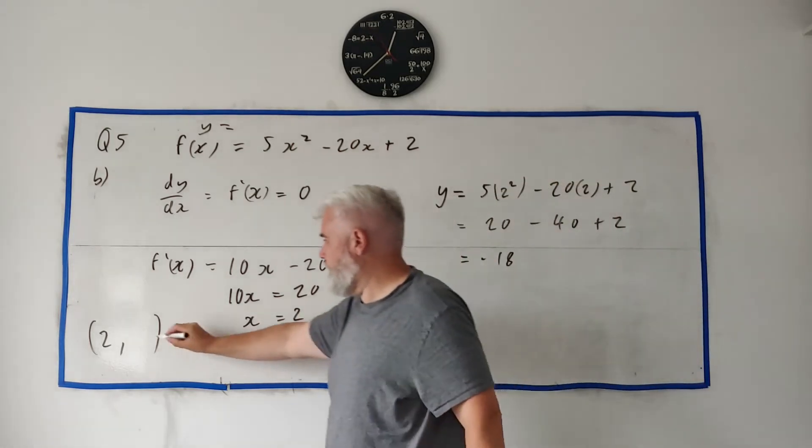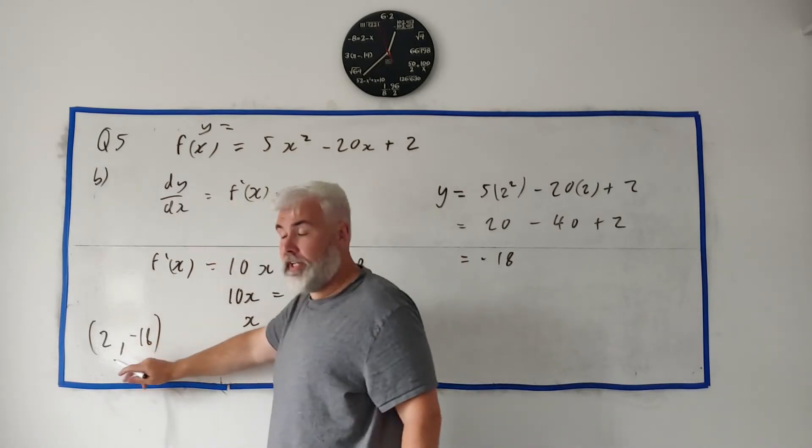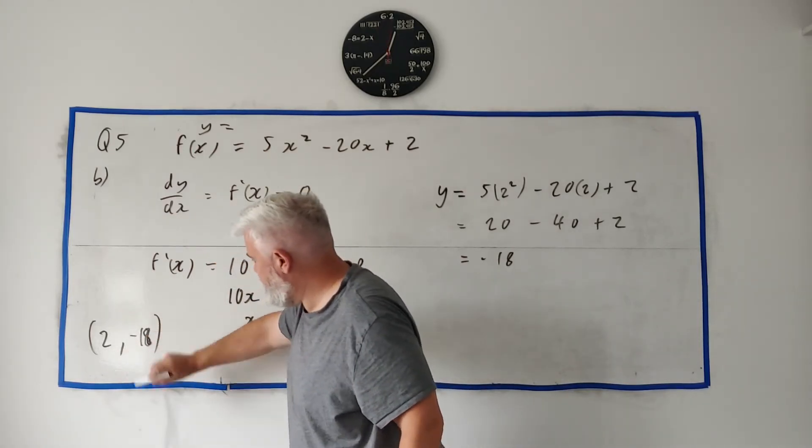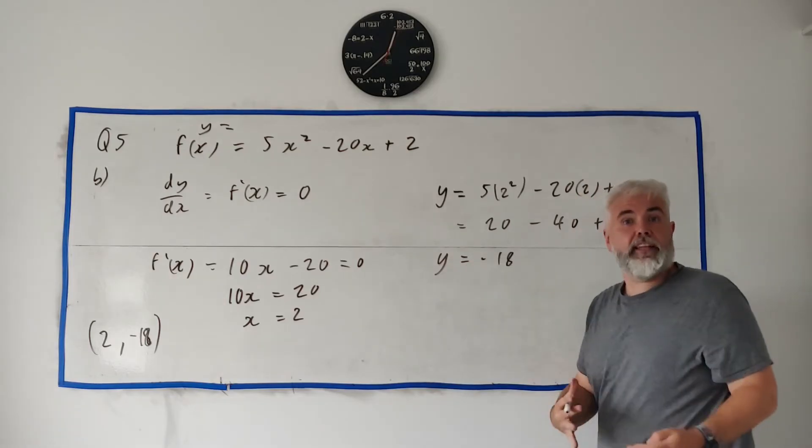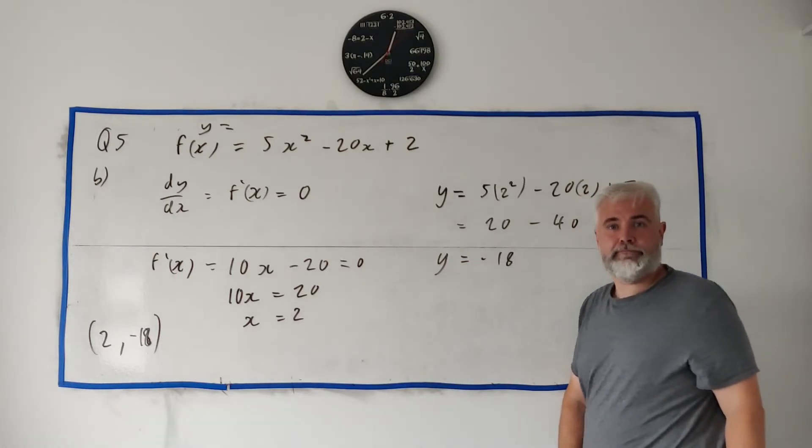Minus 18. So there's your full marks. You can write the point like this, that should be an 18, or you can write x equals 2 and y equals this. That'll get your full marks for part B.